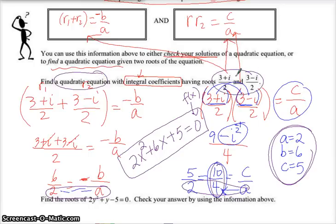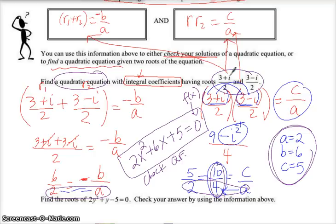You could put f(x) if it says find a function, or you could put y, but 2x squared plus 6x plus 5 equals 0 is your quadratic equation that has these roots. If you're not sure, you can check it by doing the quadratic formula and verifying you get (3 plus i)/2 and (3 minus i)/2.